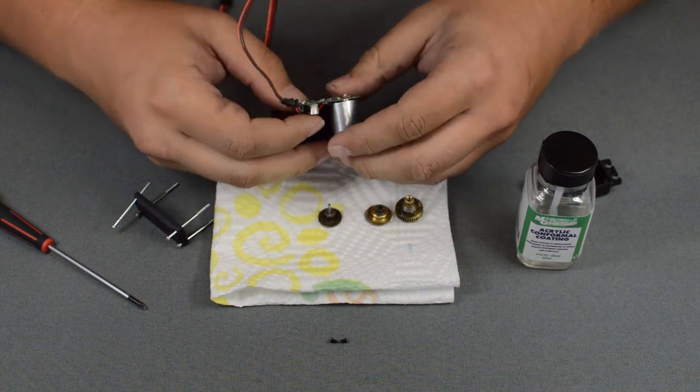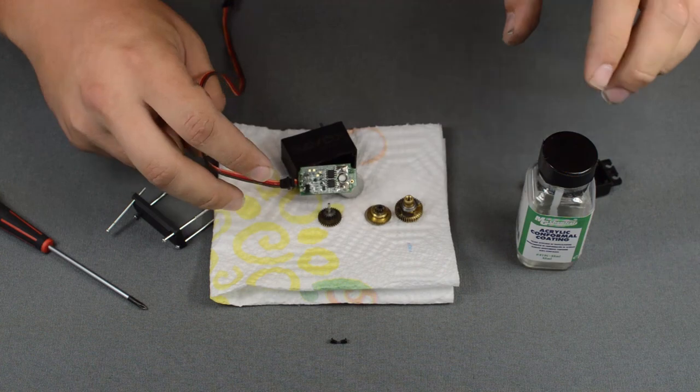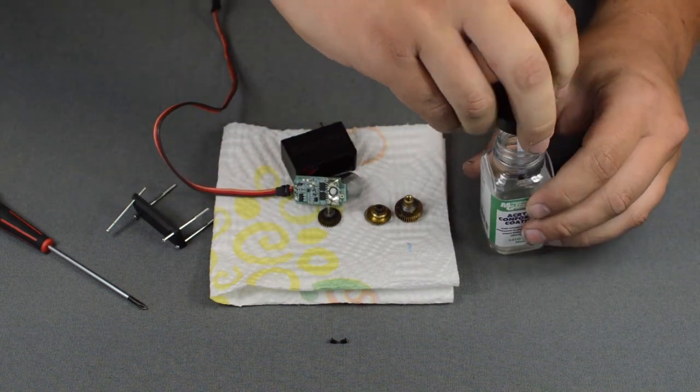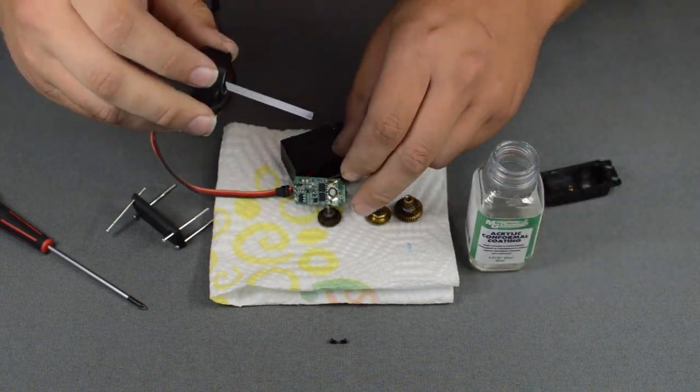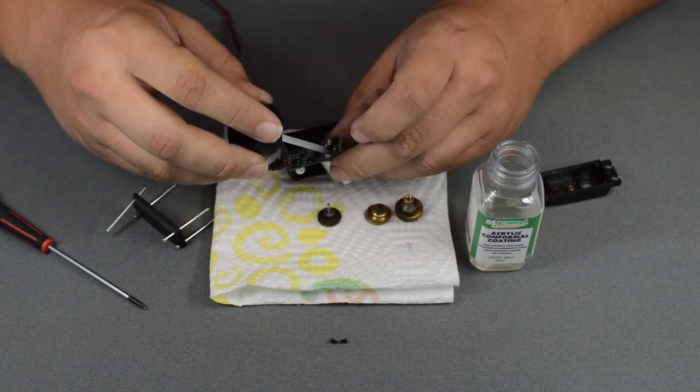Don't pull it too hard. You don't want to rip the wires. And then using the conformal coating you're just going to take it and brush it on.